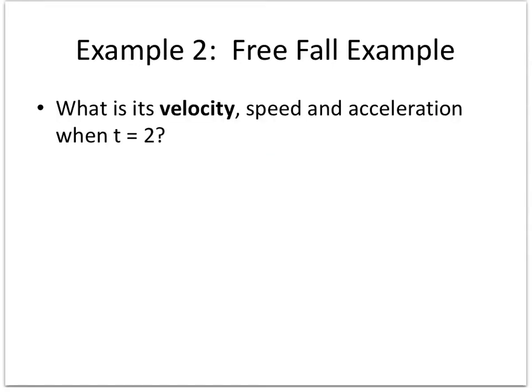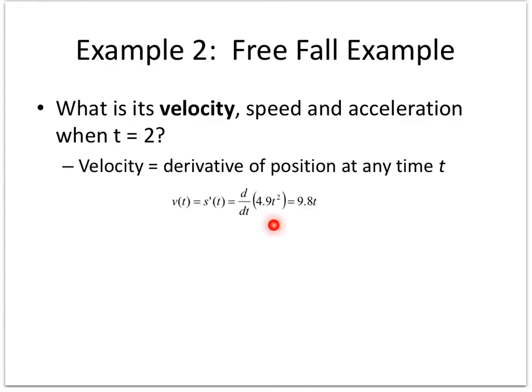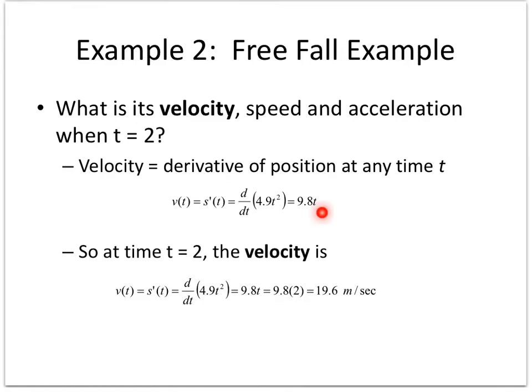When the problem asks for something that means 'take the first derivative' — if I take the first derivative of 4.9t², I get 2 times 4.9, which is 9.8t. Then if I want to know at time t equals 2 what the velocity is, I simply plug in 2 and get my meters per second, my rate of change — my velocity.